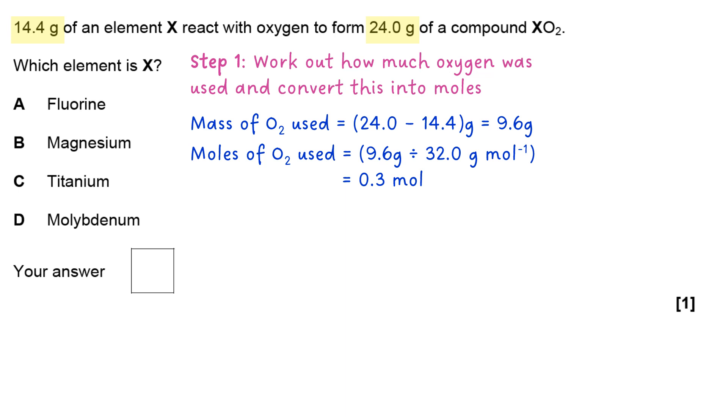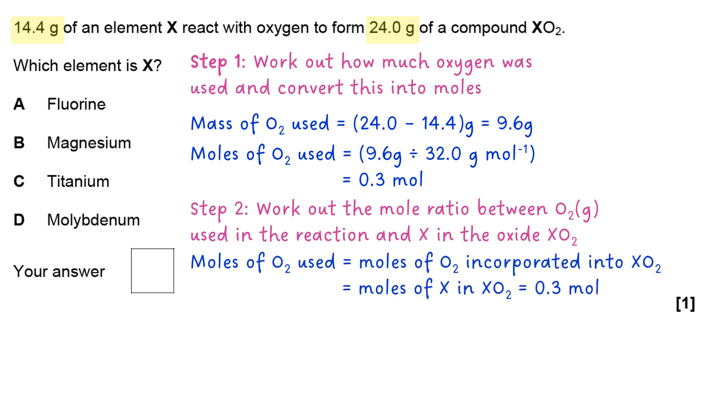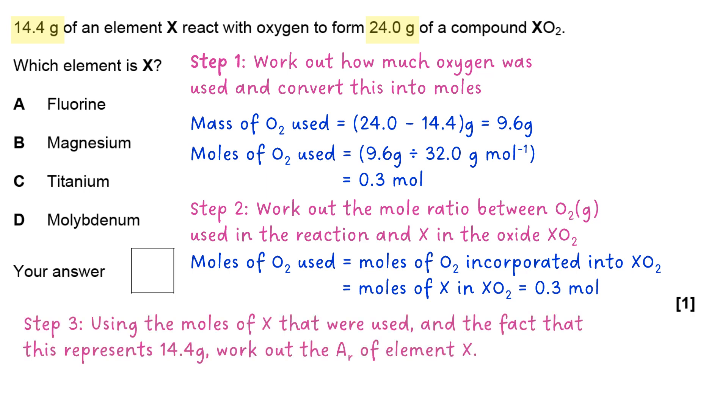Next you work out the mole ratio between the oxygen that was used and the X in the oxide. Looking at the formula you can see that XO2, the ratio between O2 and X is the same, so therefore the moles of X must also be 0.3 moles.